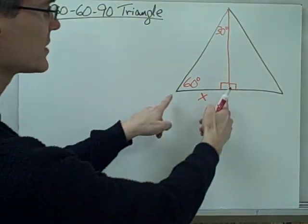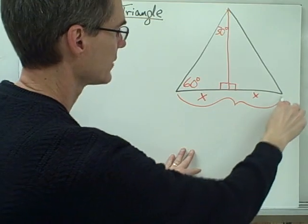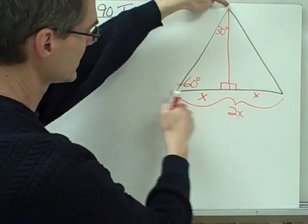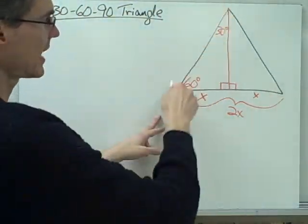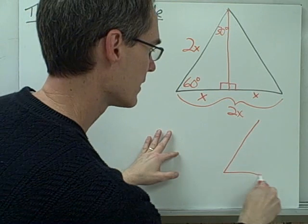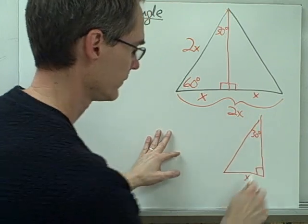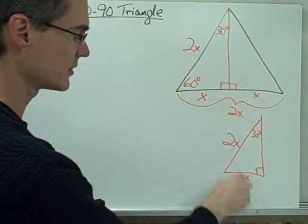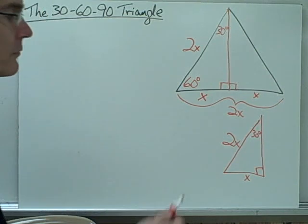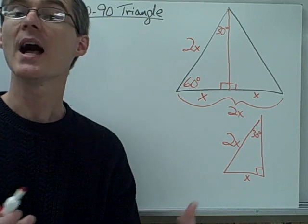I'll call the short side of the 30-60-90 triangle X. Since the altitude bisects the base, the other half is also X, making the full base 2X. Since it's equilateral, the hypotenuse is also 2X. I know the short side is X and the hypotenuse is 2X, but I still need to find the third side. I'll use the Pythagorean theorem: a² + b² = c², where the hypotenuse c = 2X.